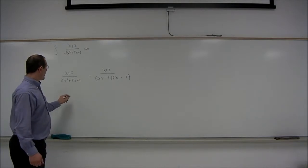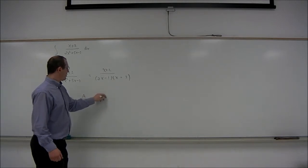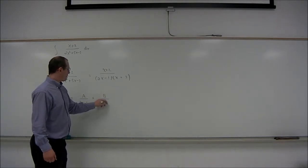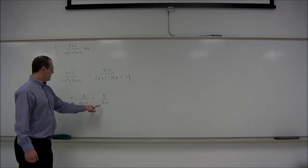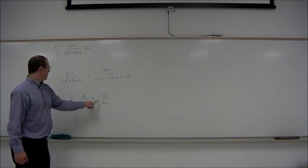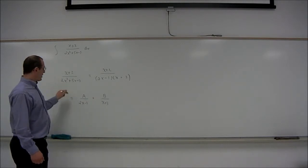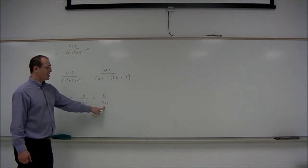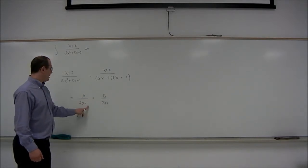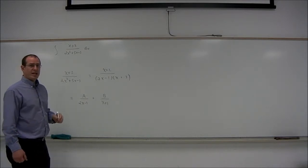So the partial fraction decomposition will look like a constant over 2x minus 1 plus another constant over x plus 3. If we were to add these two fractions together, the denominator would become 2x minus 1 times x plus 3, which is what we want. And the numerator would be some linear function, a times x plus 3 plus b times 2x minus 1. And we want that to give us x plus 2.